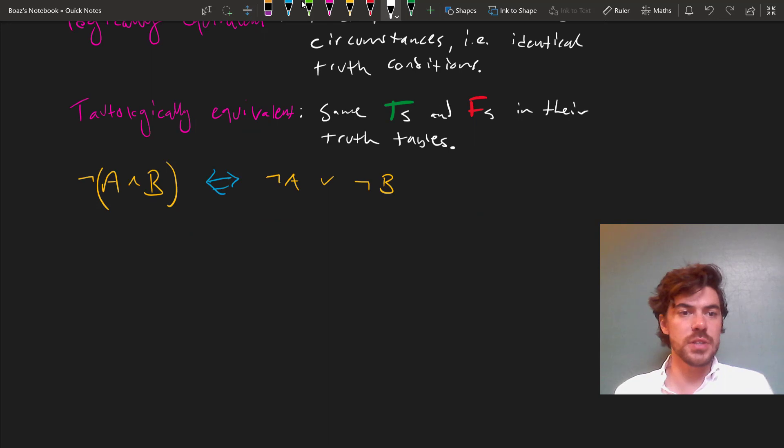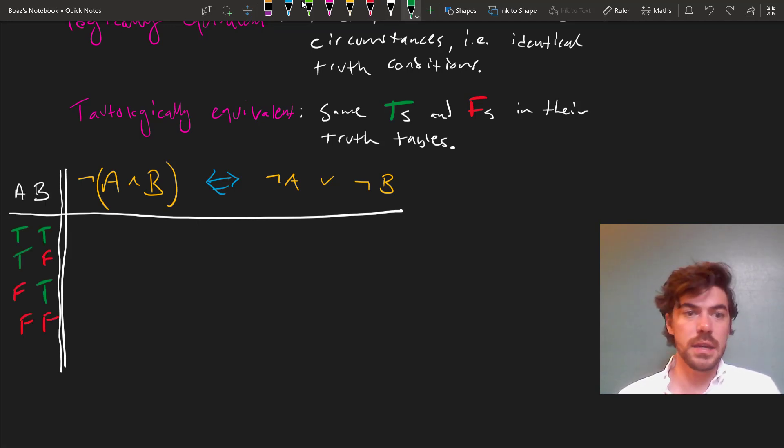Now in an earlier video, we saw this equivalence, which is one of the DeMorgan's laws. And we can show that this equivalence holds and is a tautological equivalence by putting the whole thing into a truth table. Let's start by filling out the conjunction in the not A and B side, so the left-hand side of the equivalence, which is true in the first row and false in the remaining since at least one of them is false in the other rows.